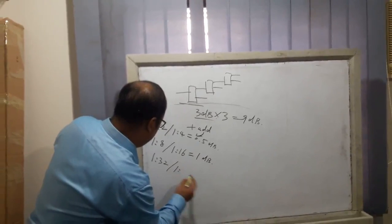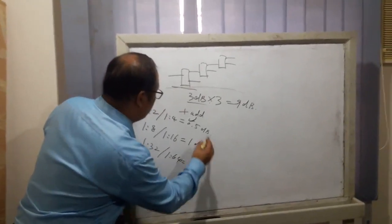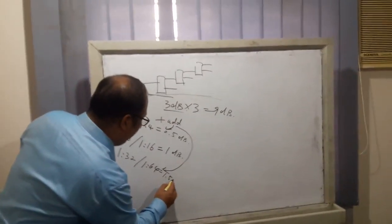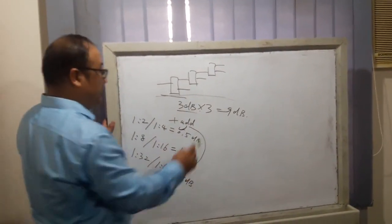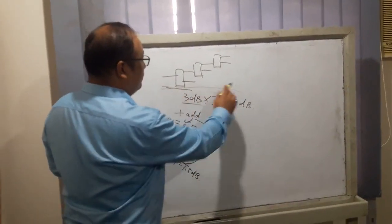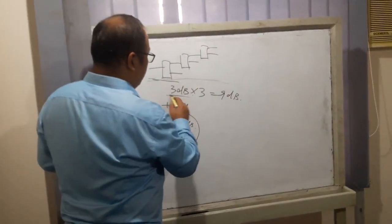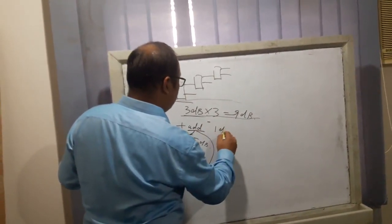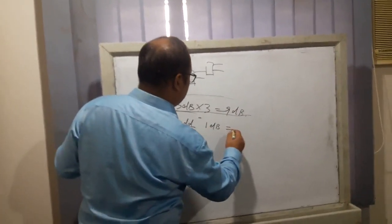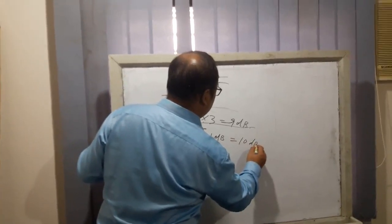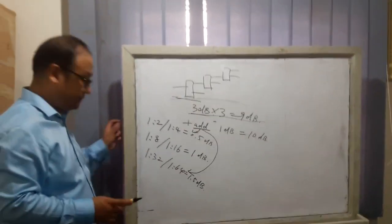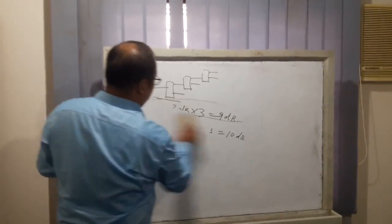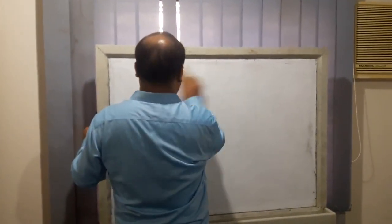So in this case, 1 to 8 splitter, the attenuation is 9 dB plus additional 1 dB, equals 10 dB loss. That's the attenuation of splitter, how we can calculate.